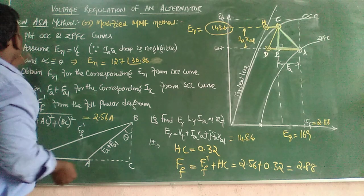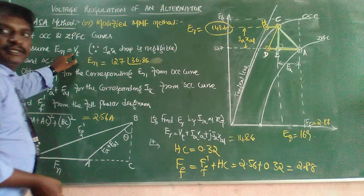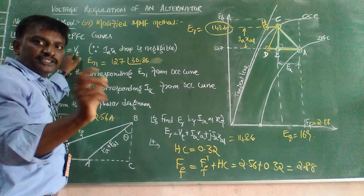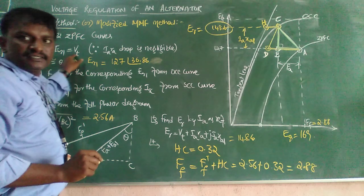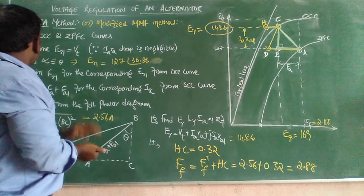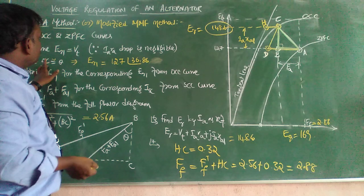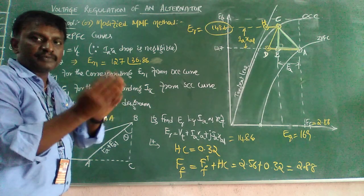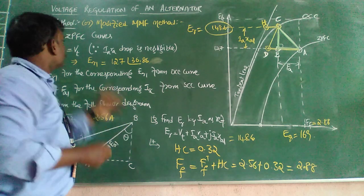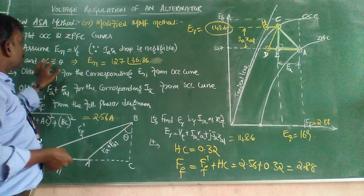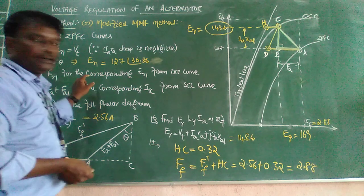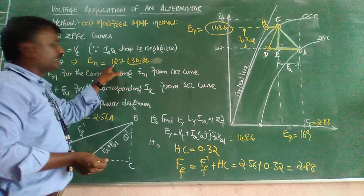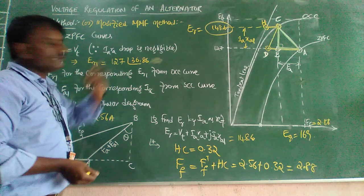ER1 is equal to BT, which is similar to your MMF method, but with some modifications. ER1 equals BT. Since the IaRa drop is negligible, and one more thing to consider — whatever be the angle of Ia with respect to BT, the same angle is also present for Ia and ER1. That is why alpha is equal to theta. Therefore, the ER1 value is the same as BT — 127 at an angle of 36.86 degrees.